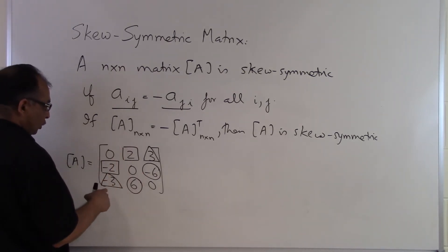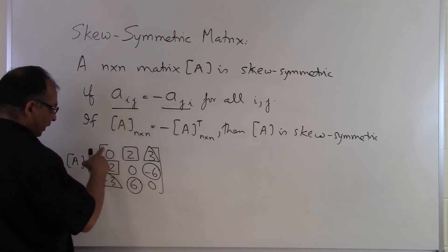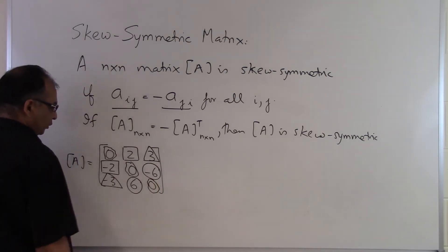So that makes it skew symmetric but we have to understand that here the diagonal is important to look at. All the diagonal elements which you see here, zero, zero and zero, they have to be zero.